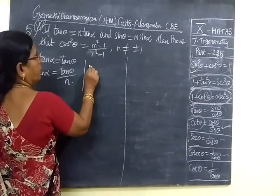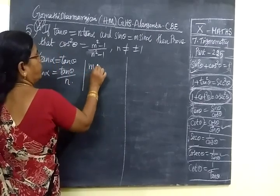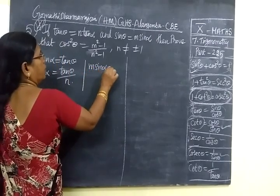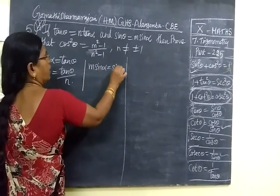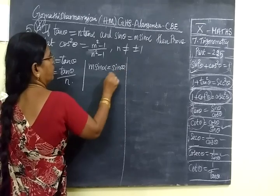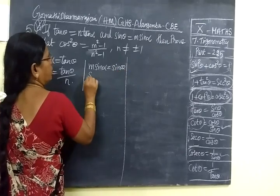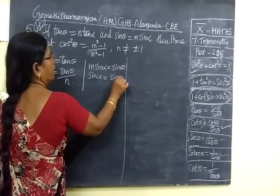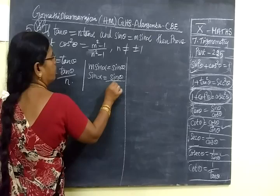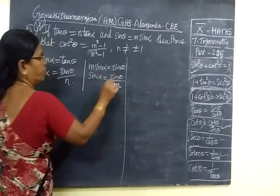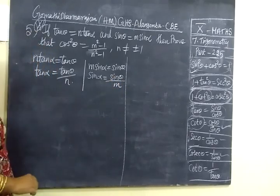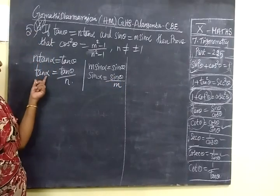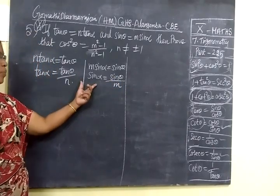Next, from sin θ = m sin α, we get m sin α = sin θ, so sin α = sin θ / m. Now tan and sin are combined in the two equations.